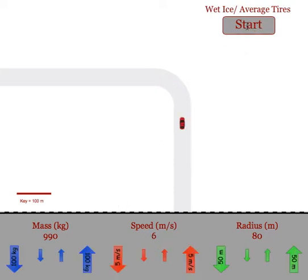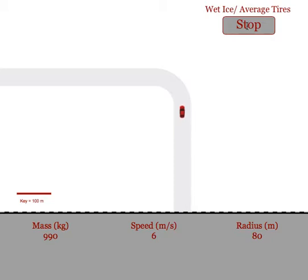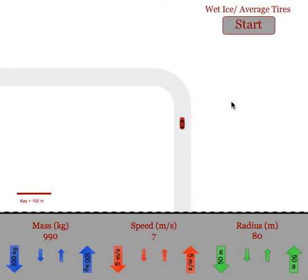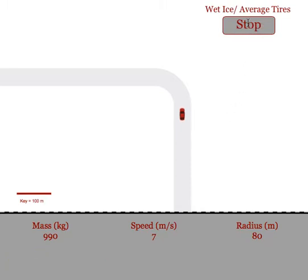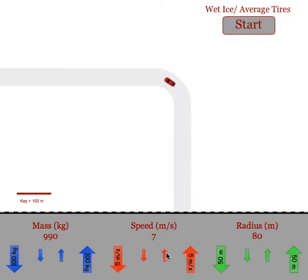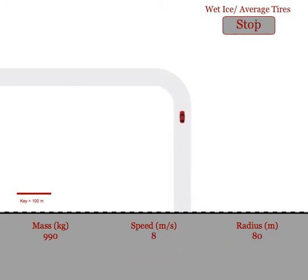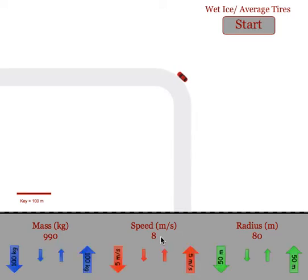We can then try it at 6. We saw that 9 was unsafe, so we're trying to find the last safe speed the car could go around the turn. 6 seems good. 7 meters per second looks good — the car is able to make it around the turn. And then at 8 meters per second, the car is slipping off the roadway. So for this trial, the students would make sure they wrote down that 7 meters per second was the last safe speed they could go around the turn.